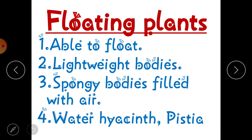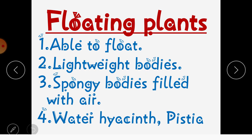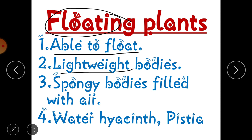Firstly we are going to start with floating plants. As it is clear from the name, floating plants are plants which are able to float on water. Only those plants will float in water which are light in weight — plants which are heavy will not be able to float. So they have lightweight bodies and spongy bodies filled with air.